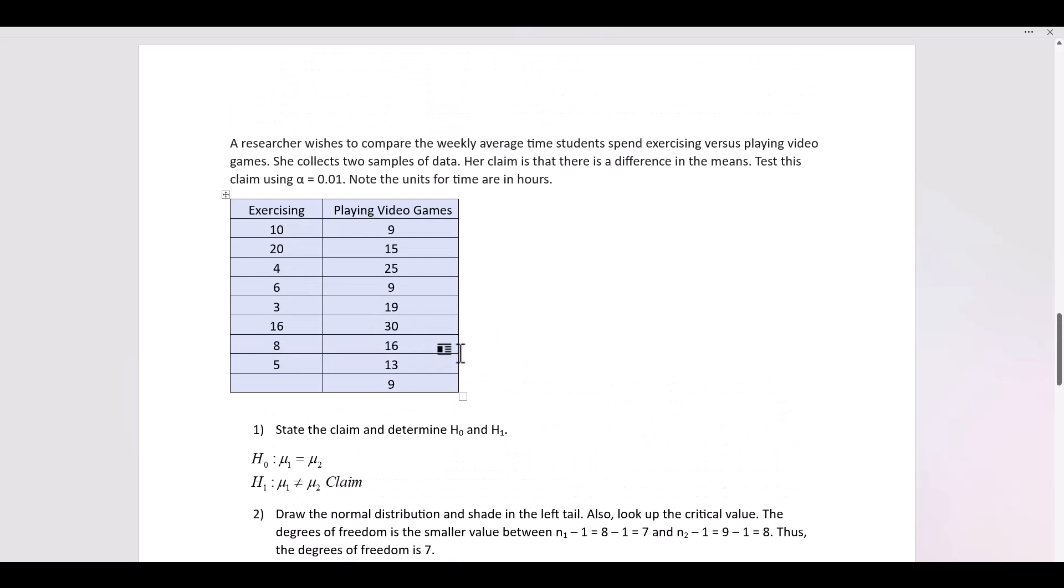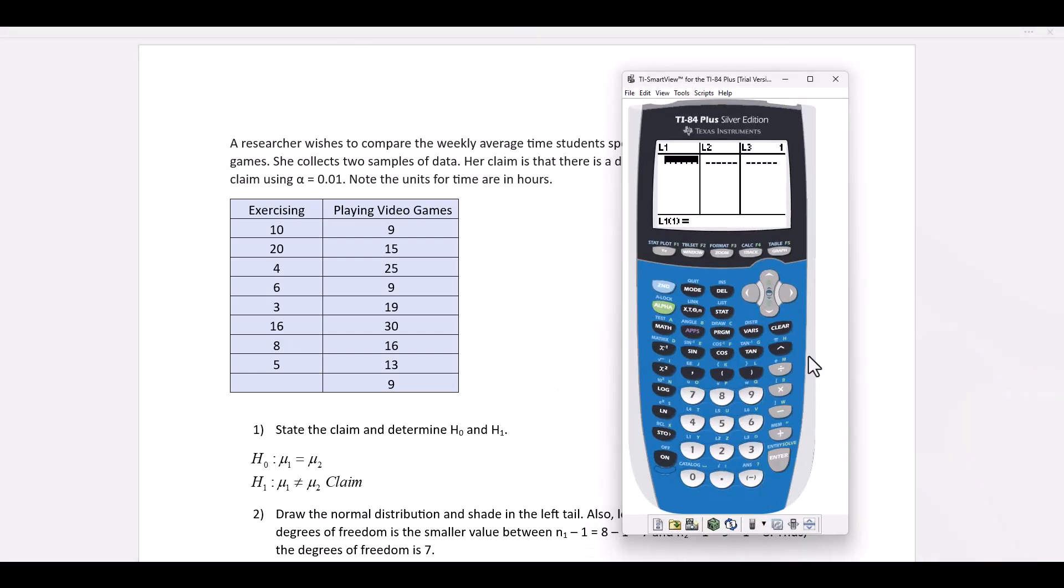Now, we have to calculate the test point. So when we are given raw data, we have to do the following to compute the test point with a TI calculator. The first step is we need to enter the data. So we press stat and we select option 1. In this first column, which is labeled L1,